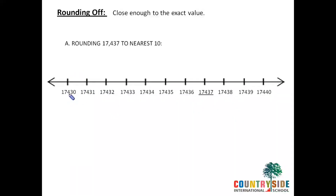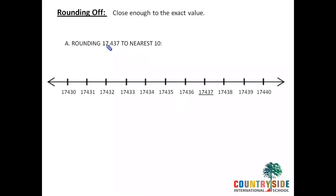That is 17,430, then 17,431, 432, 433, and so on. Our number 17,437 is represented here, as it is underlined. You can see students that this number is more closer to 17,440. So the answer to rounding 17,437 to the nearest 10 will be 17,440.